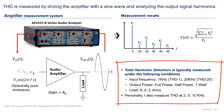Distortion is typically measured at input frequencies of 1 and 20 kHz at full, half, and 1 watt power dissipations on 8, 4, and 2 ohm loads. Additionally, I also like to measure THD at 2, 5, and 10 kHz to get a better feel of the distortion signature.